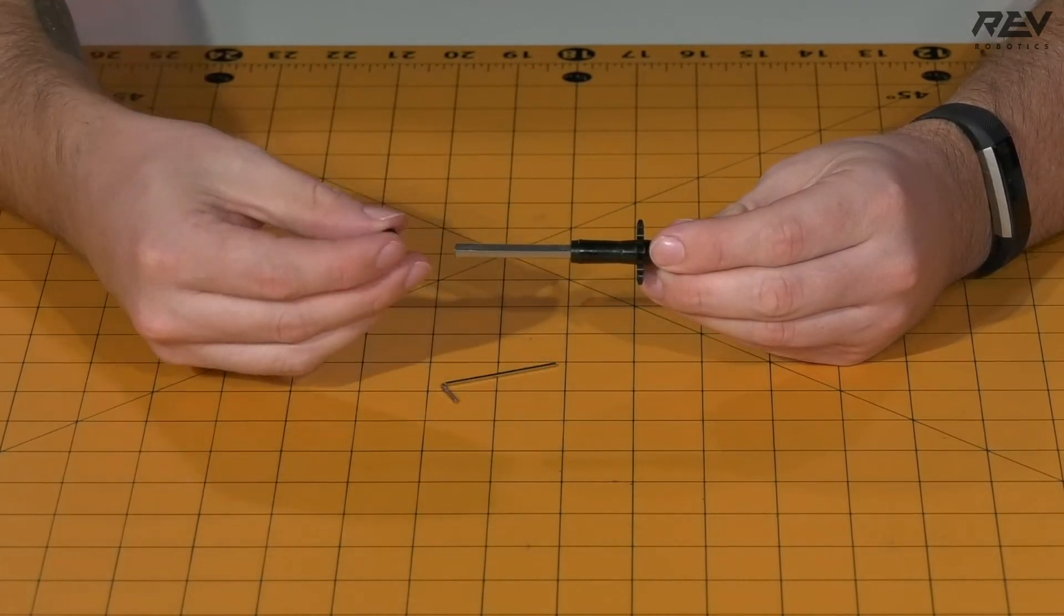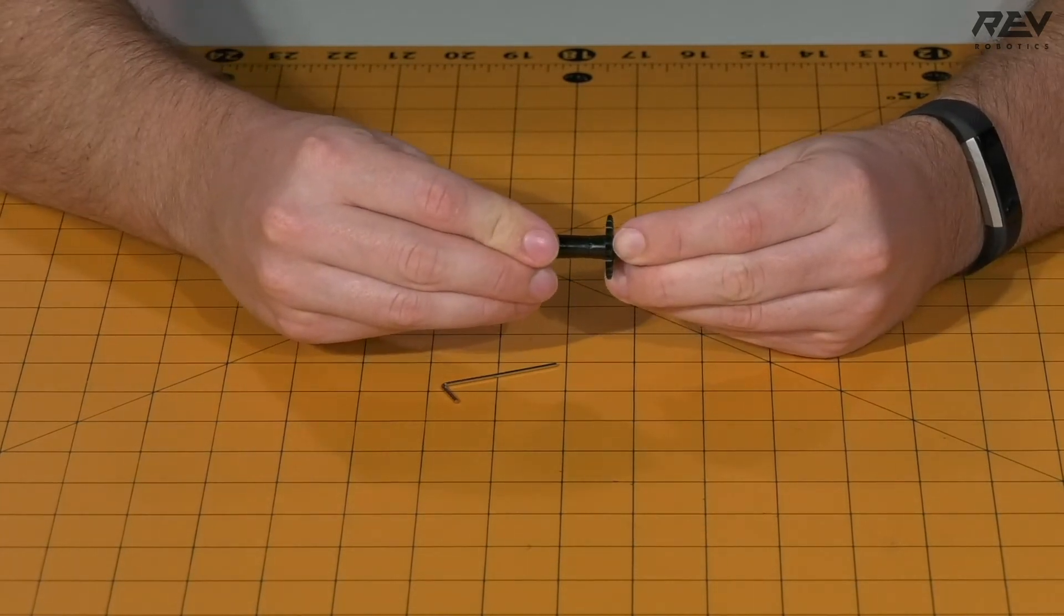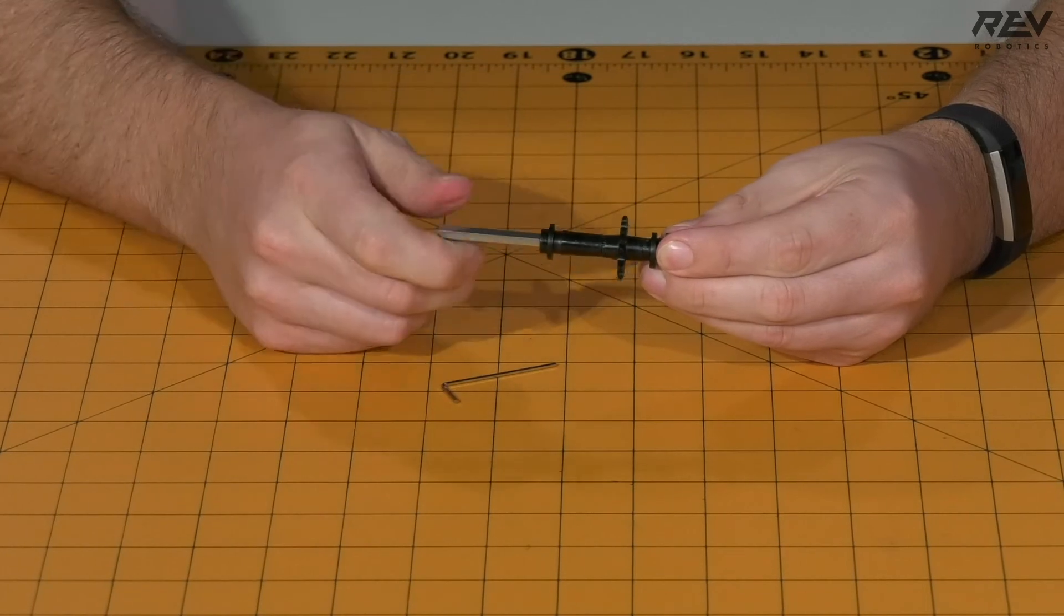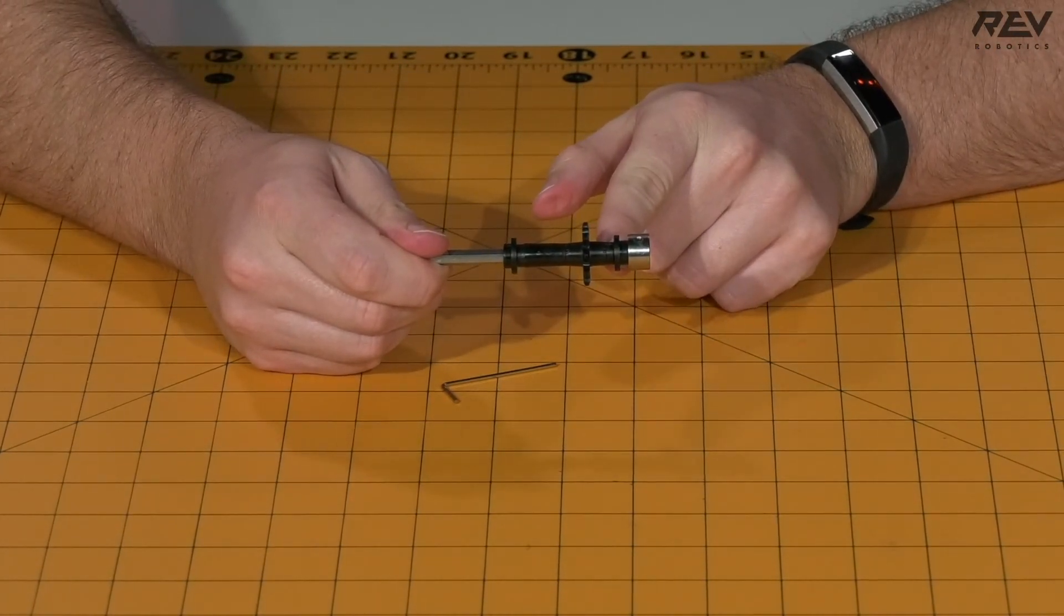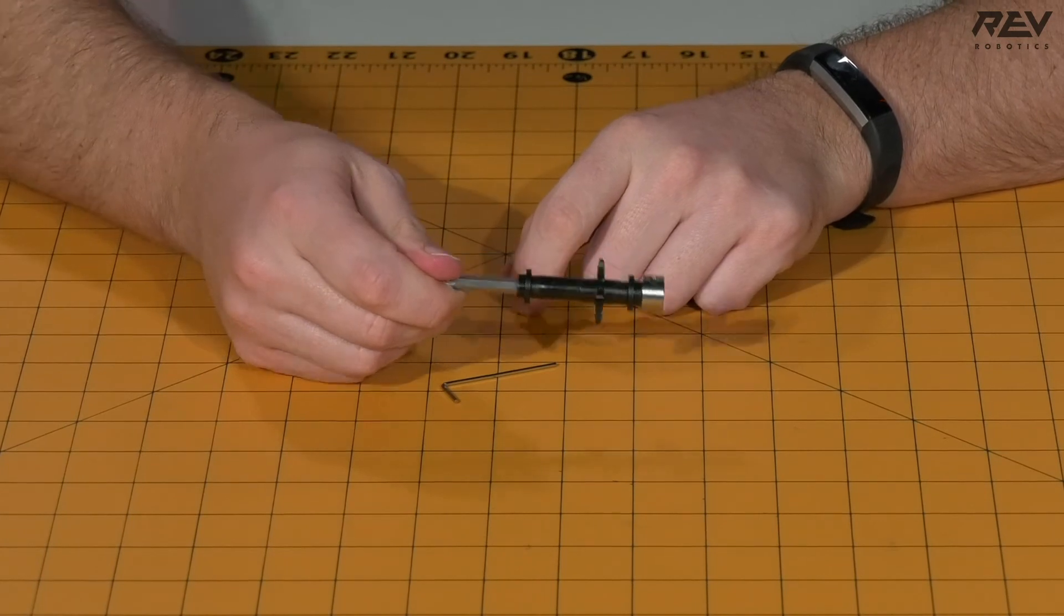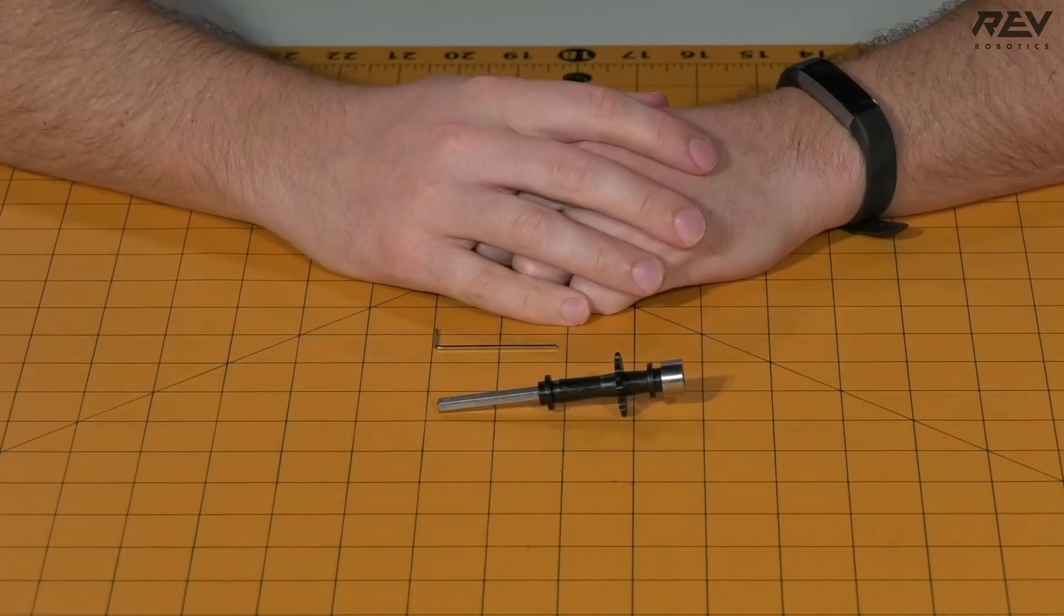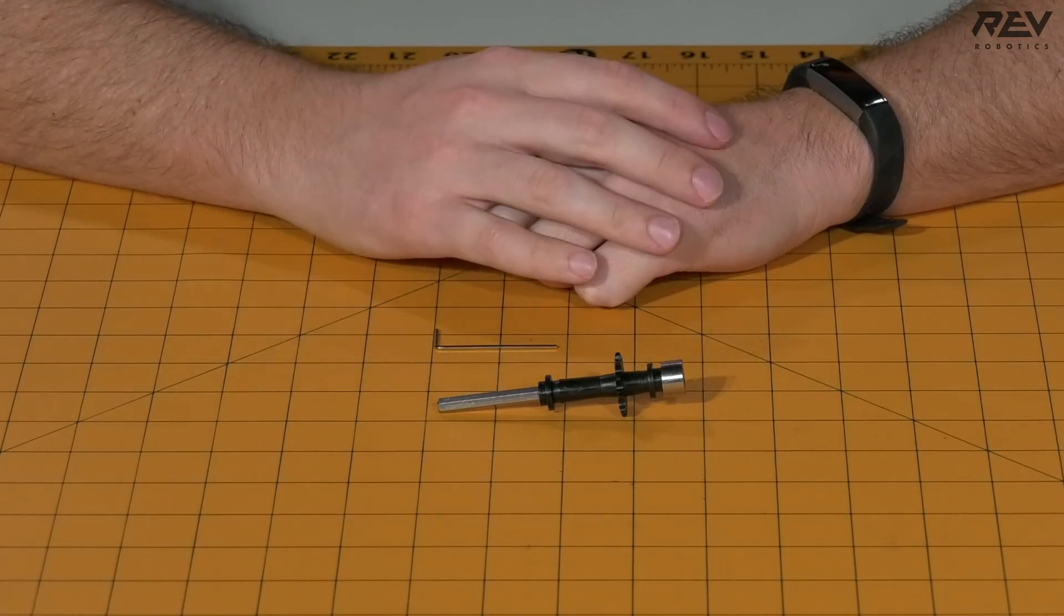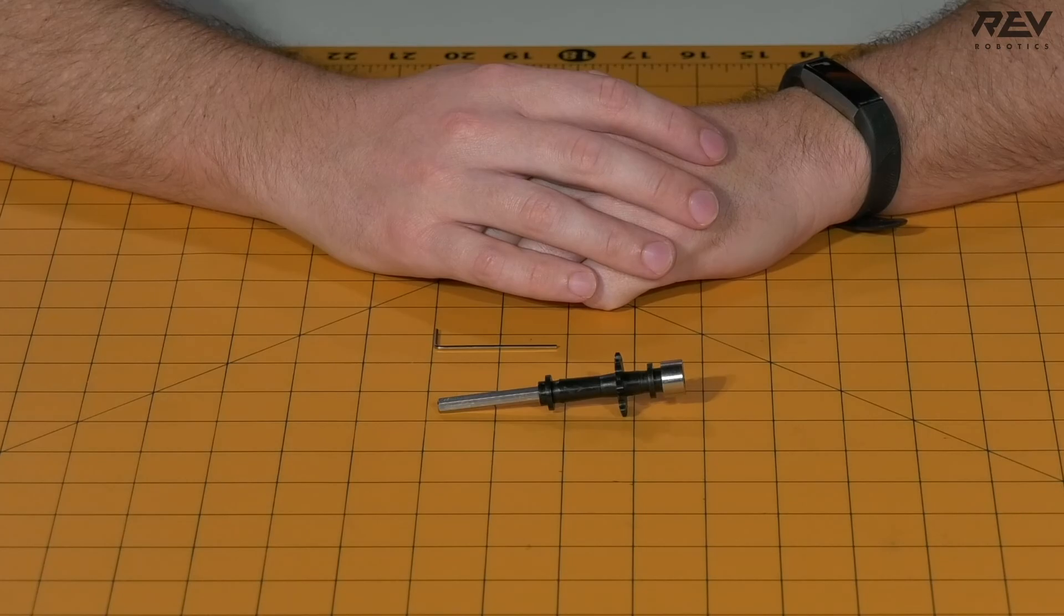Last piece is the remaining short through-bore bearing. Slide that on, and note its orientation is the opposite of the previous short through-bore bearing. Once it is done, the 90 millimeter single sprocket shaft assembly is complete. You will need to do one more 90 millimeter single sprocket shaft assembly to complete the drivetrain.